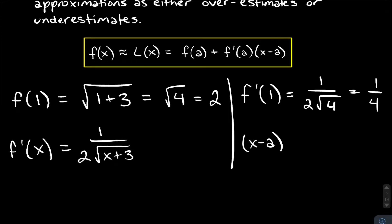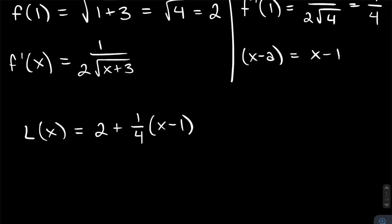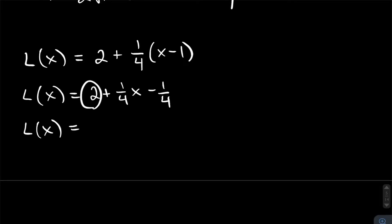X minus a is x minus 1 since a is 1. So L of x equals f of a plus f prime of a times (x minus a): that's 2 plus one fourth times (x minus 1). Distributing, we get 2 plus one fourth x minus one fourth. Combining like terms: 2 is 8 over 4 minus 1 over 4 gives 7 over 4. So L of x equals 7 over 4 plus 1 over 4 times x. This is the equation of our tangent line, and it is approximately equal to f of x.